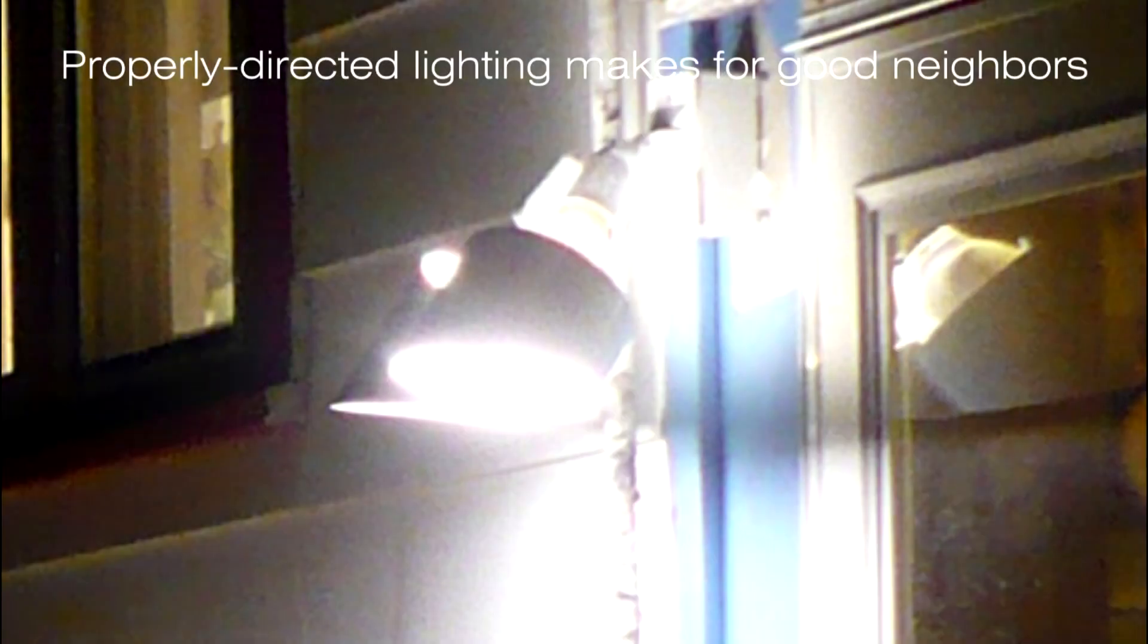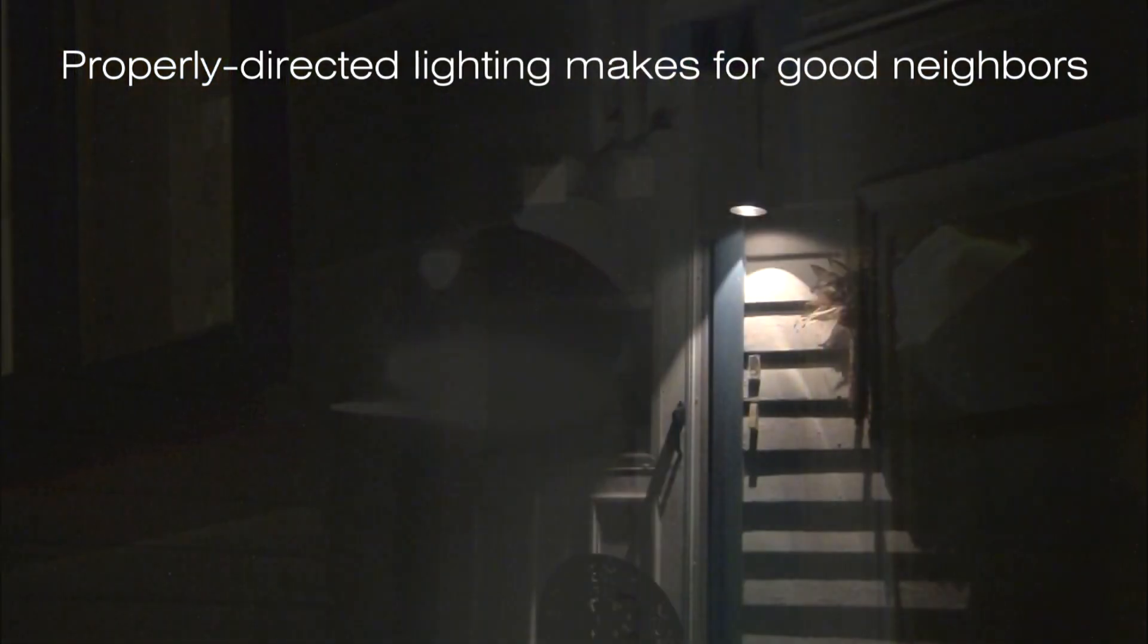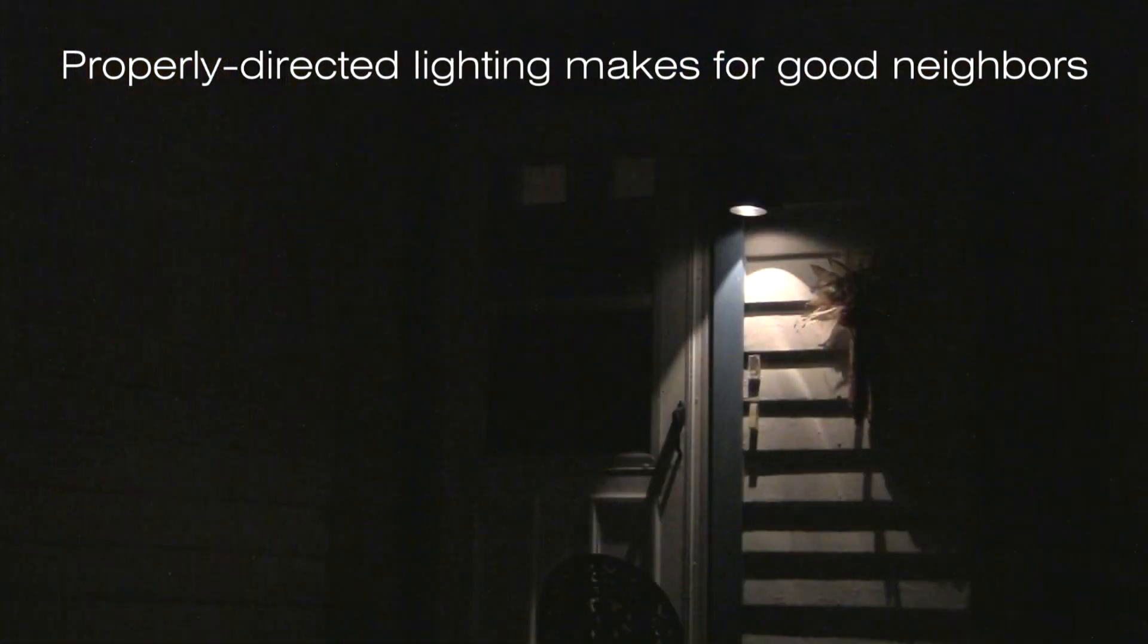And now this week's dark sky fact. Unshielded or poorly aimed light at night can cause light trespass, a situation where a fixture illuminates an area outside of its intended target. Check your own lights to be sure that when they're turned on, they only light up your property. If they don't, re-aim or shield the light, or better yet, replace it with a dark sky approved fixture instead.